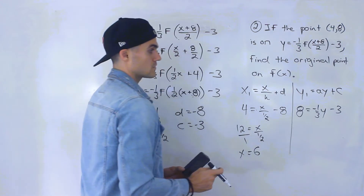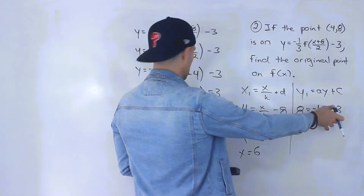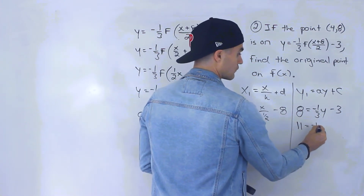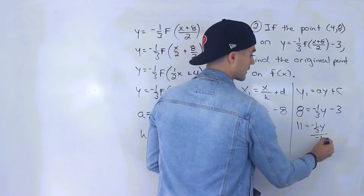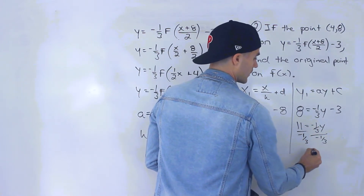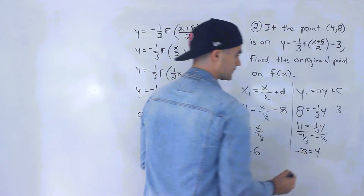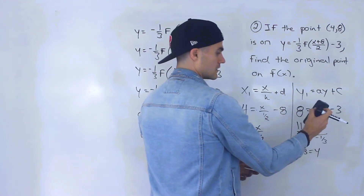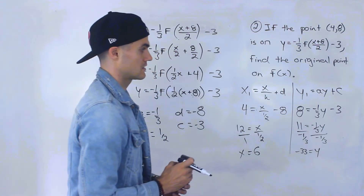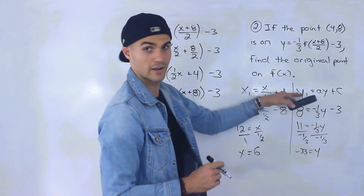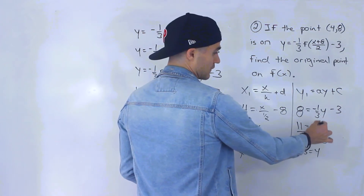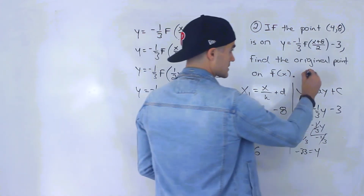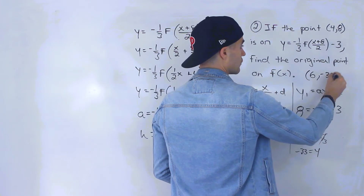For the y equation: bringing the negative 3 over gives 11 = negative one-third times y. Dividing both sides by negative one-third, 11 divided by negative one-third equals negative 33. So y = negative 33, and the original point on f of x is (6, −33).